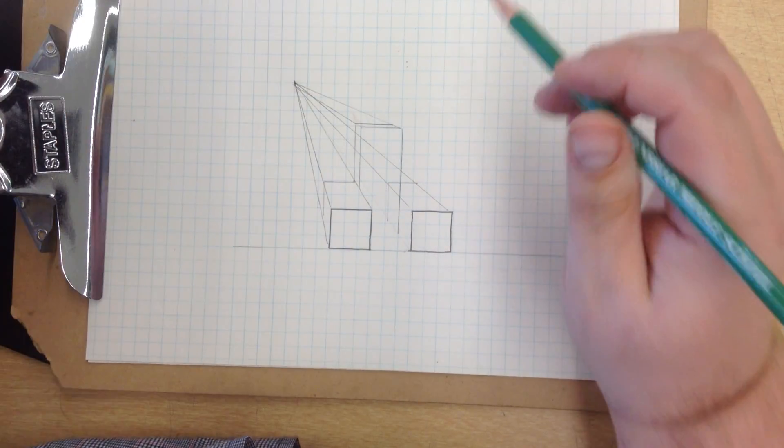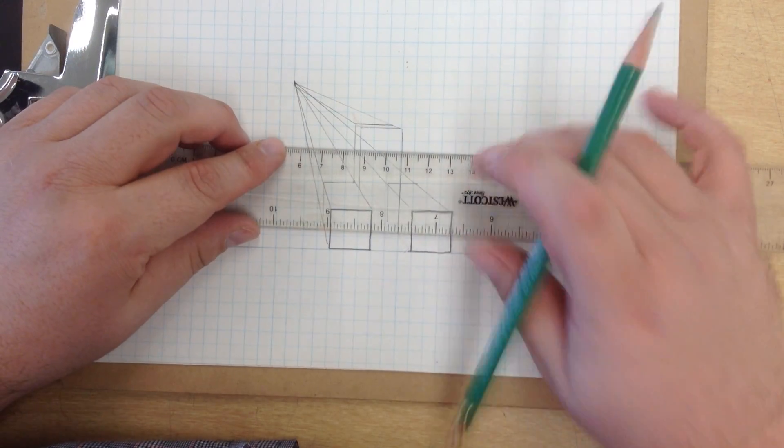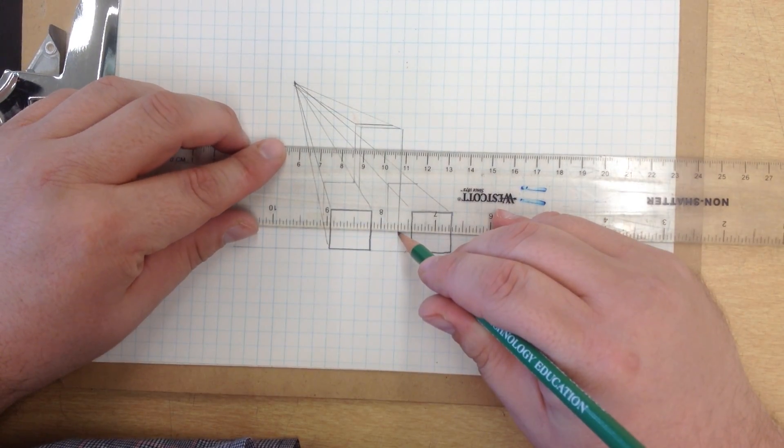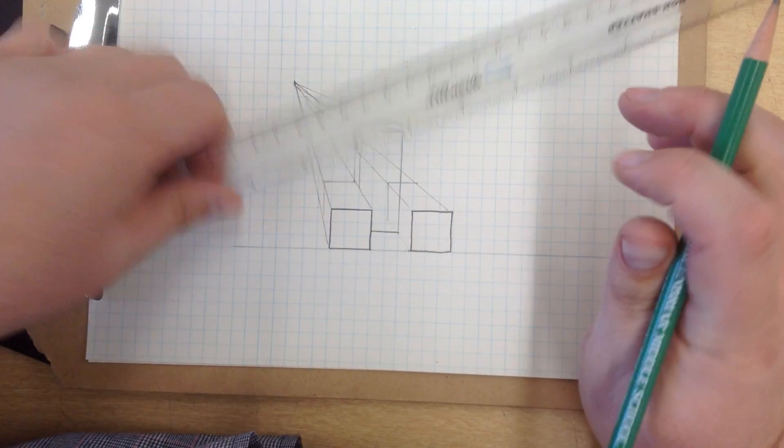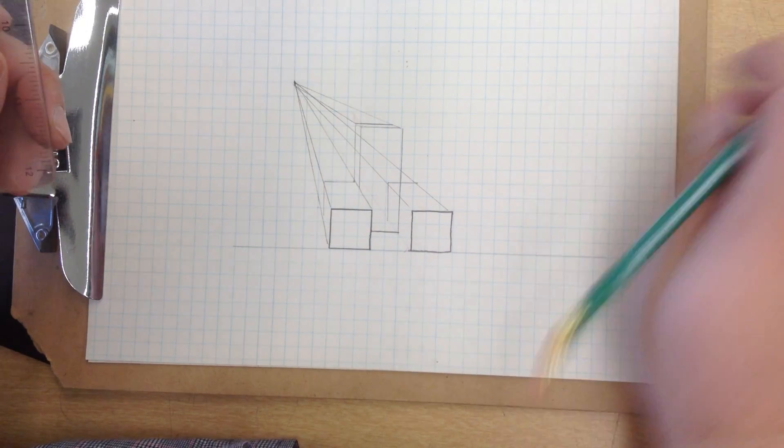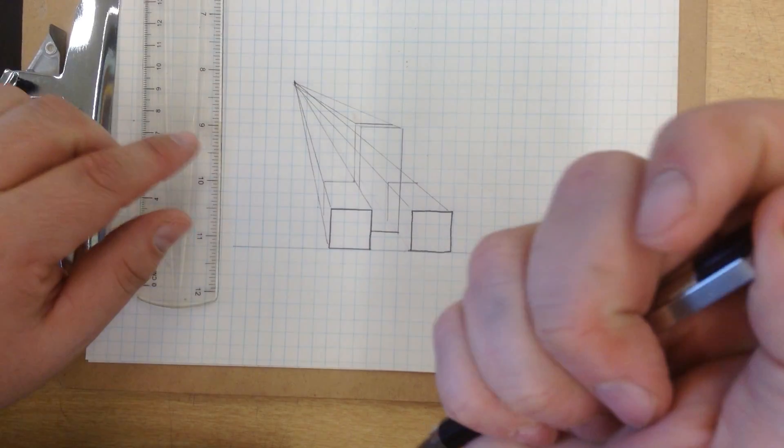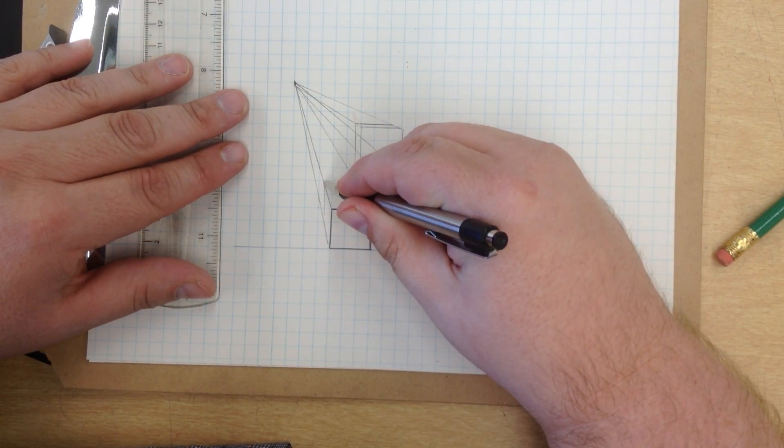Go right across right there. Now I pretty much have my shape laid out, forgot that bottom piece. Now that I have this established, I can go over all my outlines in pen. You'll see it emerge a little bit better.